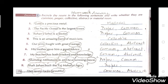Sixth: 'His mother gave him good advice.' Mother is a common noun, advice is an abstract noun. Seventh: 'My teacher had both wisdom and knowledge.' Teacher is a common noun, wisdom is an abstract noun, knowledge is an abstract noun.